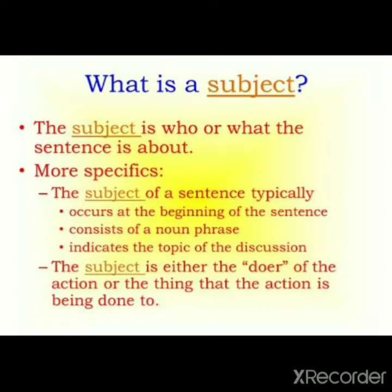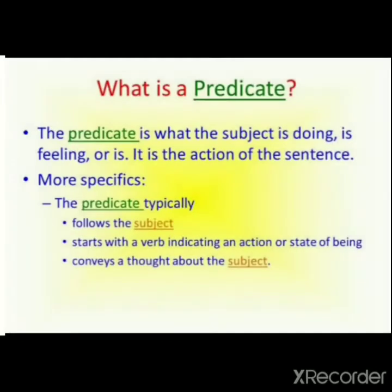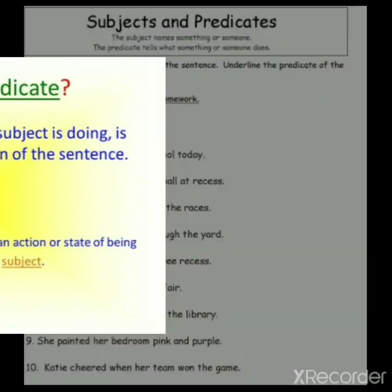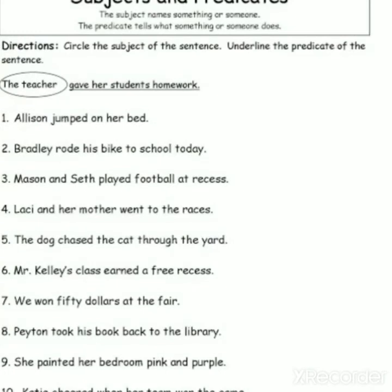Now let us move toward the predicate. What is a predicate? The predicate is what the subject is doing — it is the feeling or action of the sentence. More specifically: number one, it follows the subject; number two, it starts with a verb indicating an action or a state of being; number three, it conveys a thought about the subject.